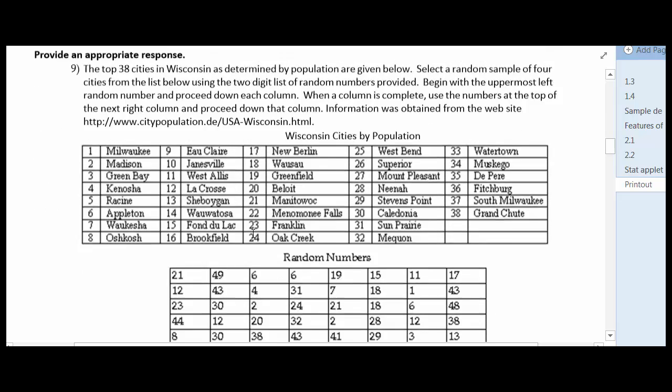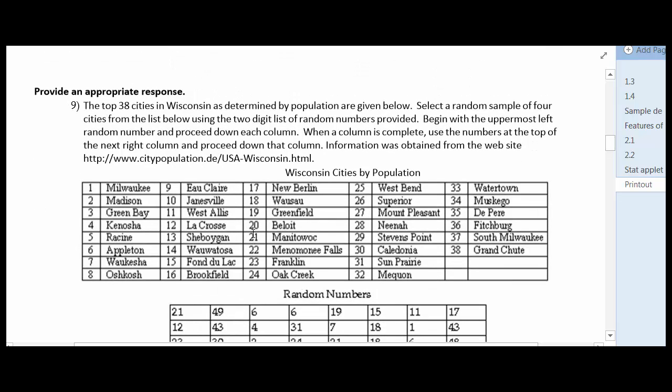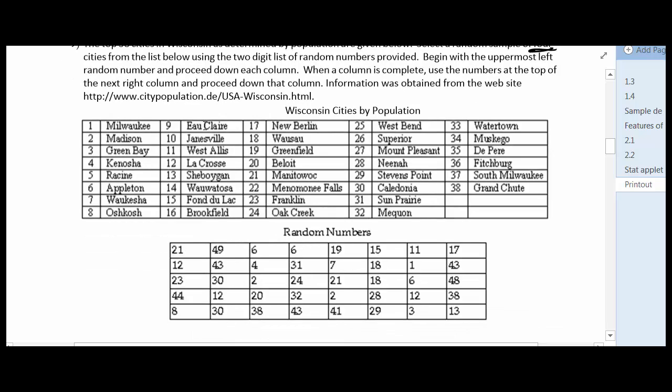Number nine, we are given a set of what's called a sampling frame, where we've taken a population and numbered them. And then we're given a set of random numbers and asked to determine a sample. So it says top 38 cities in Wisconsin are determined by population. Select a random sample of four from the list below, using two-digit list of random numbers provided, begin with the uppermost left and proceed down each column. When a column is complete, use the numbers at the top to the next right. They're telling us they want us to go down. Technically with random digits, we can sort of determine whether we go across or down.